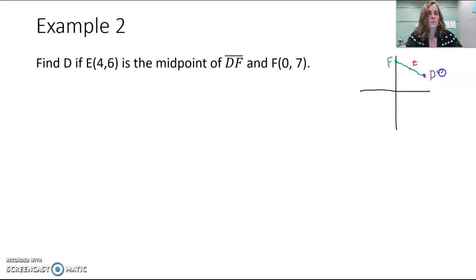D is equal to who knows, but that's one of our endpoints because we have the whole segment DF. We're given F's coordinates and E's coordinates, the midpoint. E is the midpoint of that segment, so this would be congruent to this, or each of those pieces would be congruent to each other.